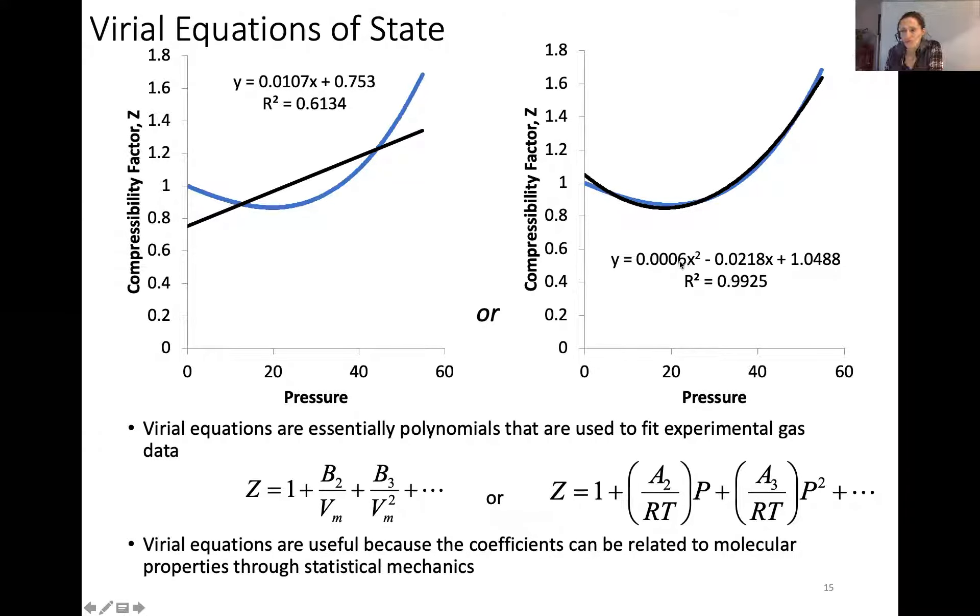Now the kicker is what do these coefficients mean? In the case of the virial equation, A3 over RT, this value is equal to 0.0006. So if you know what R and T are, you can determine what this A3 is, and that coefficient will then carry with it information about your particular system. These are called empirical fitting parameters and they may or may not have physical meaning.